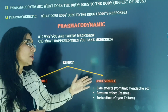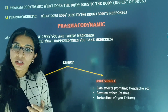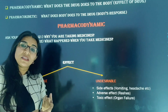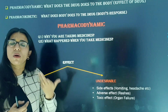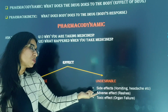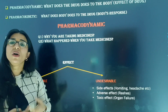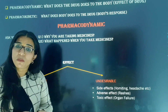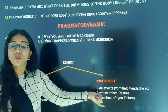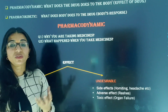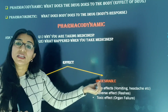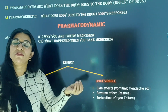Undesirable means what we don't want — joh hume nahi chahiye. We don't want any reaction from the medicine that makes us even more sick. For example, sometimes when we take a medicine, it gives us side effects — headache starts, vomiting occurs, stomach pain, or other problems arise — those come under side effects. Similarly, there can be adverse effects — allergy, rashes — like when someone takes a medicine and gets an allergic reaction. The most major undesirable effect is the toxic effect. Toxic means poison — so if a medicine causes organ failure, obviously the person can die or a very severe condition can arise. All of these are undesirable effects.